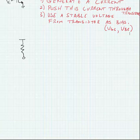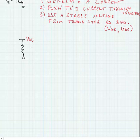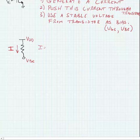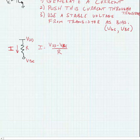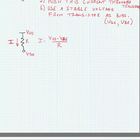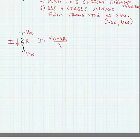So how do we generate a current? If we have a resistor and we have known voltages on either side of the resistor, then we know what the current is through the resistor. We can create known voltages on both sides: first by using a supply voltage, and second by using a diode-connected transistor.